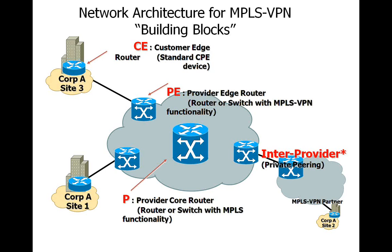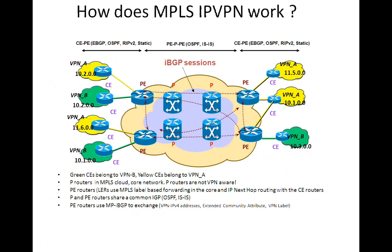As you can see in this particular slide, there is a corporation A which has three different sites. It is possible that these sites are in different countries altogether, in which case you will have to take service from multiple service providers. To simplify the understanding of how MPLS IP VPNs work, we will assume there is only one service provider cloud. This slide demonstrates how you can build connectivity across the yellow VPN sites and the green VPN sites.